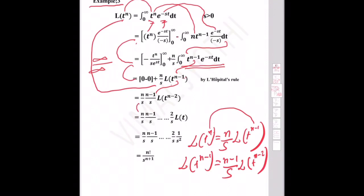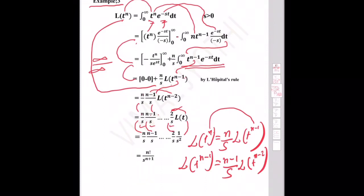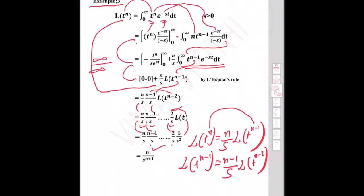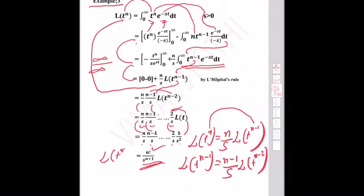Continuing the reduction systematically, substituting n, n−1, n−2, n−3, down to 1: the numerators give n · (n−1) · (n−2) · · · 2 · 1 = n!, and the denominators give s^(n+1). Therefore, L{t^n} = n! / s^(n+1). Students should memorize this formula.